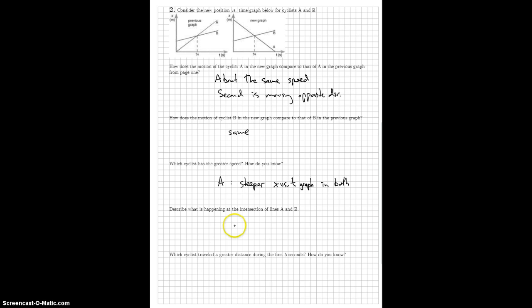What is happening at the intersection of lines A and B? Again, A and B are passing or crossing or whatever you want to call it. They're at the same spot at that moment.